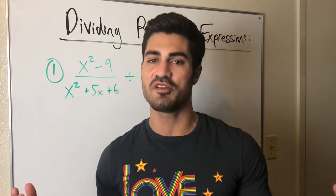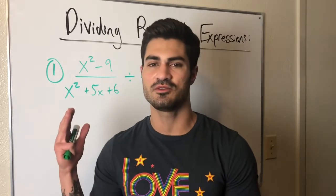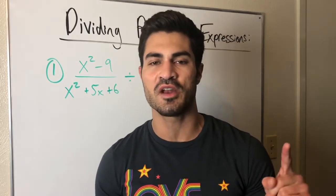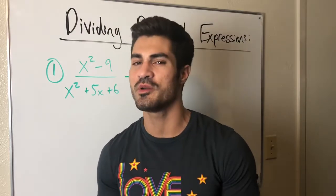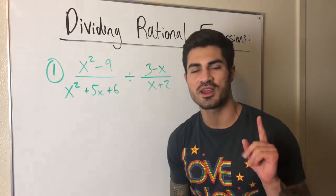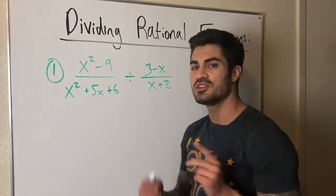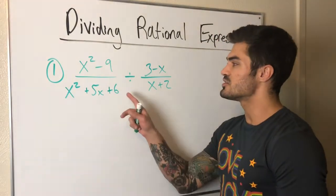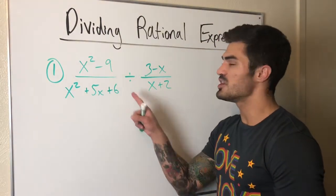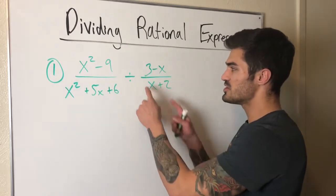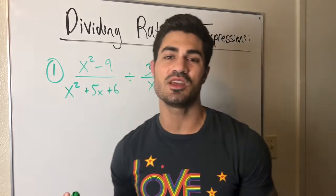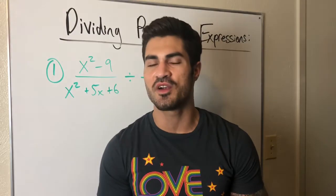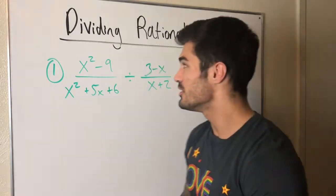Dividing rational expressions is almost the same thing. We just have to remember one thing: how to divide fractions. I have a video on it, but if you don't remember, I'll remind you — it's the same as multiplying except for one thing: we just flip the divisor. So in this case, to solve this example, we change this to multiplication and flip the second fraction. It's almost the same process as multiplying rational expressions.